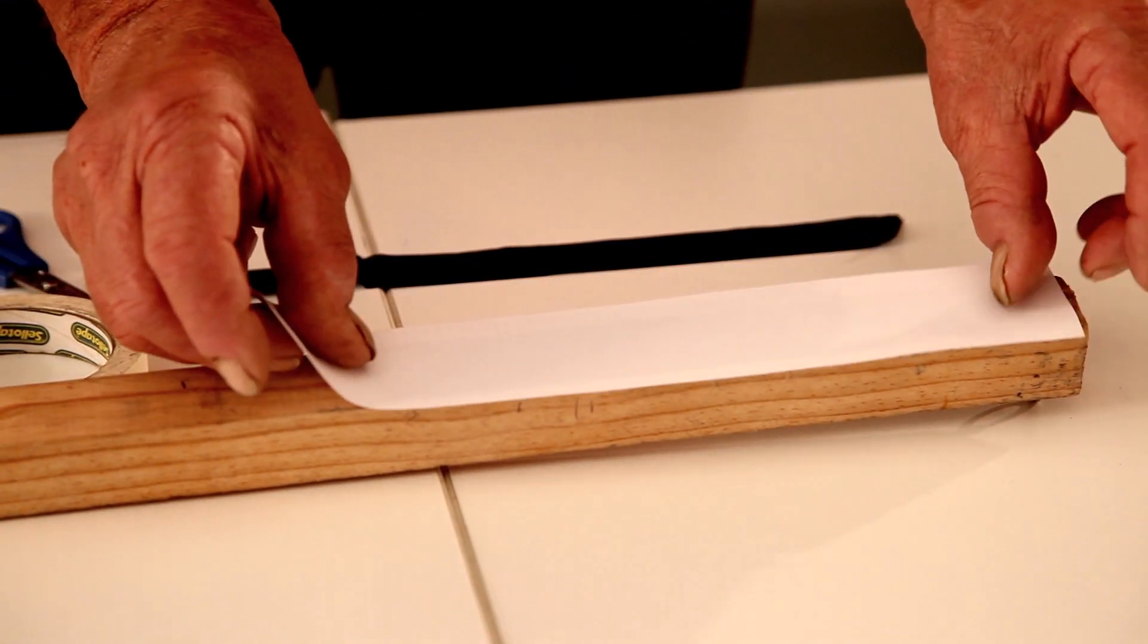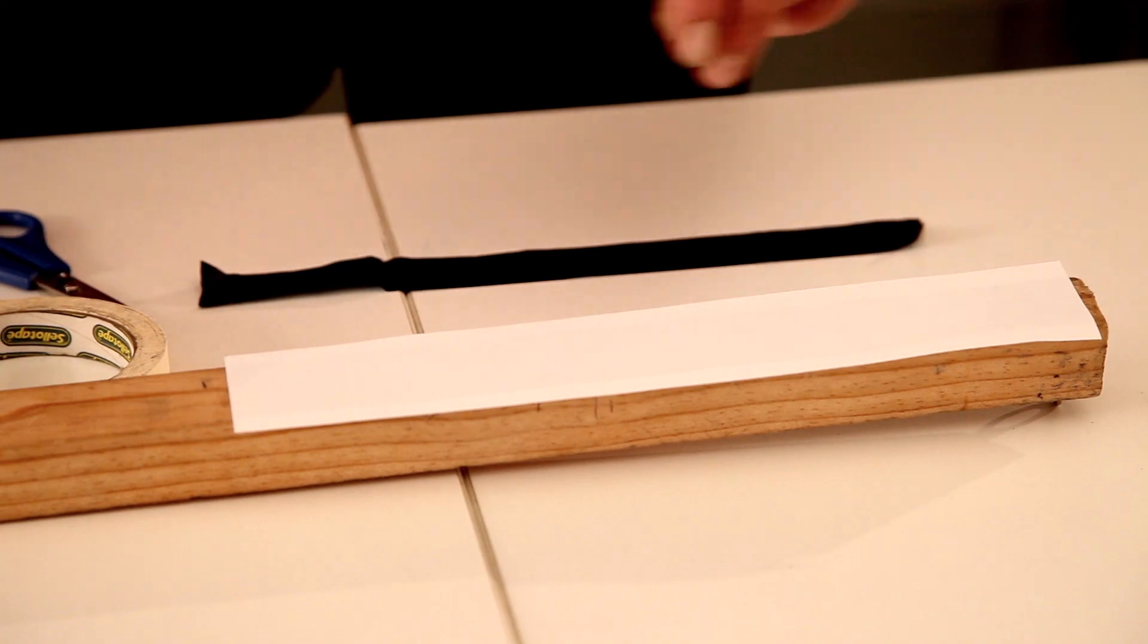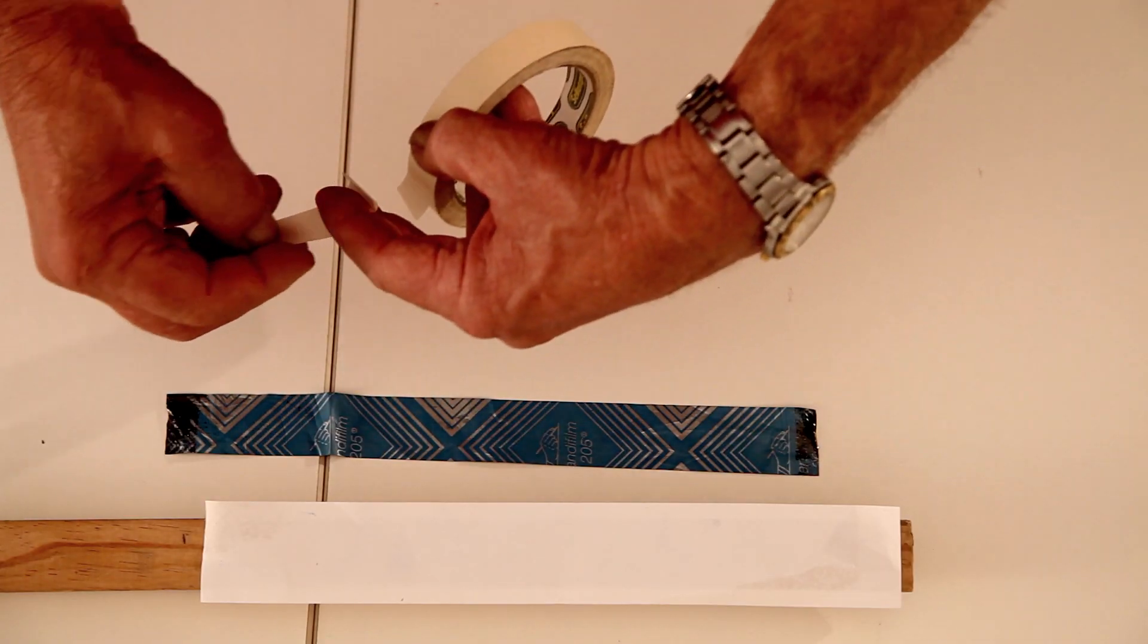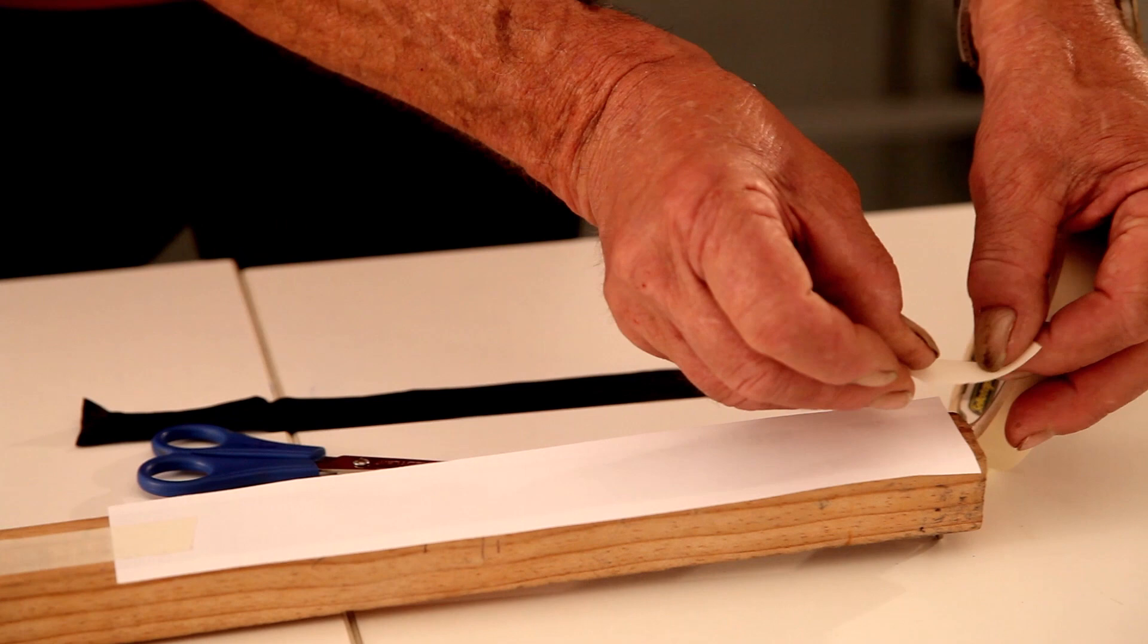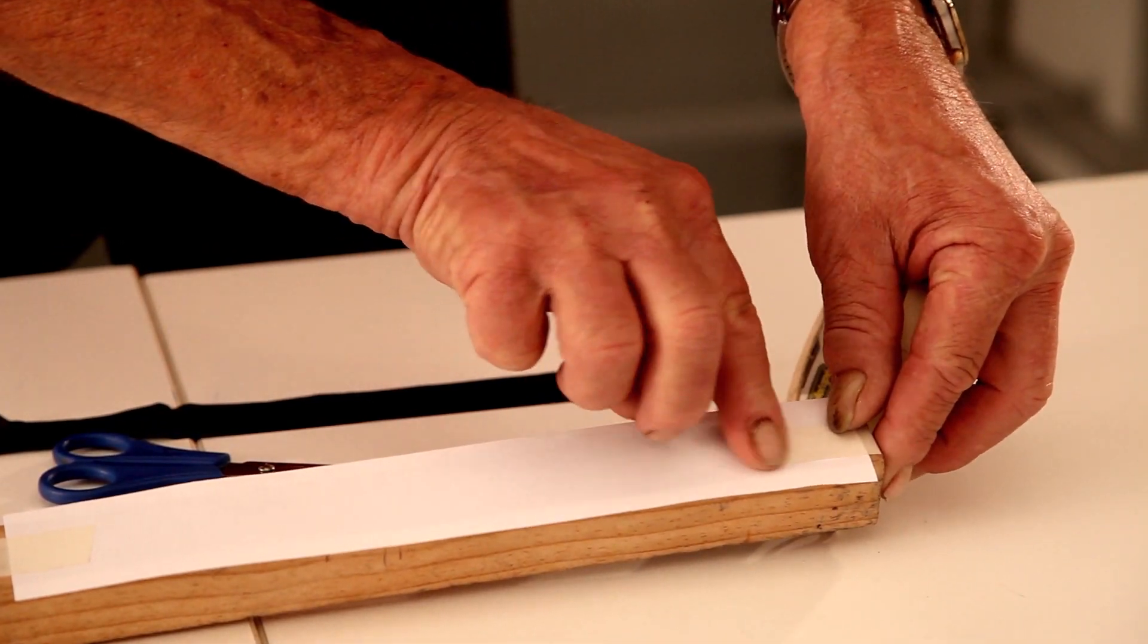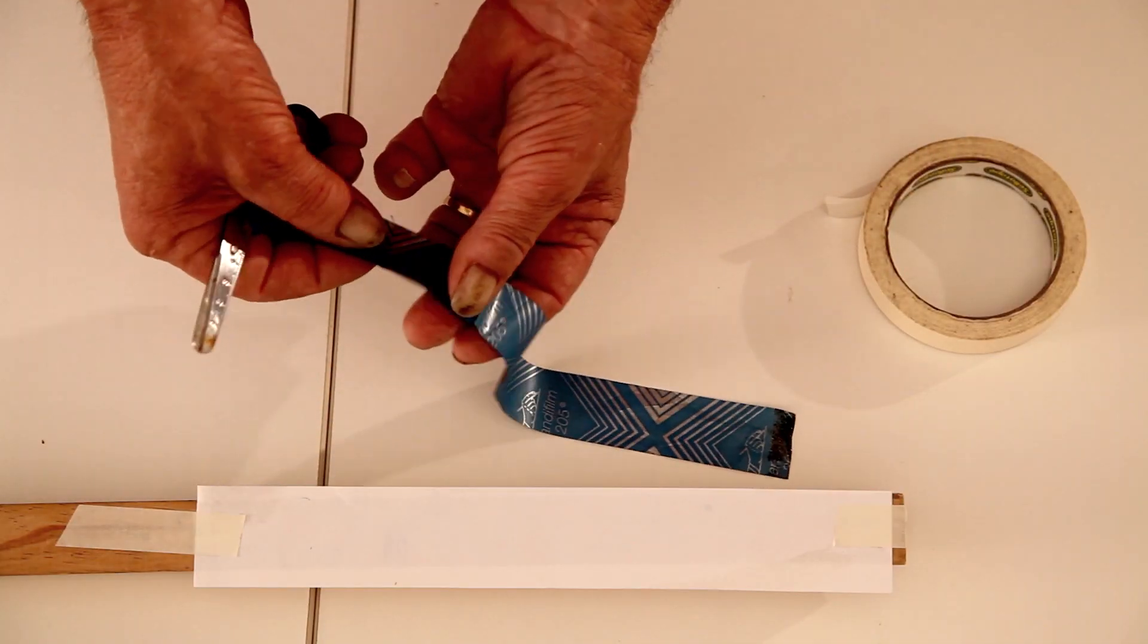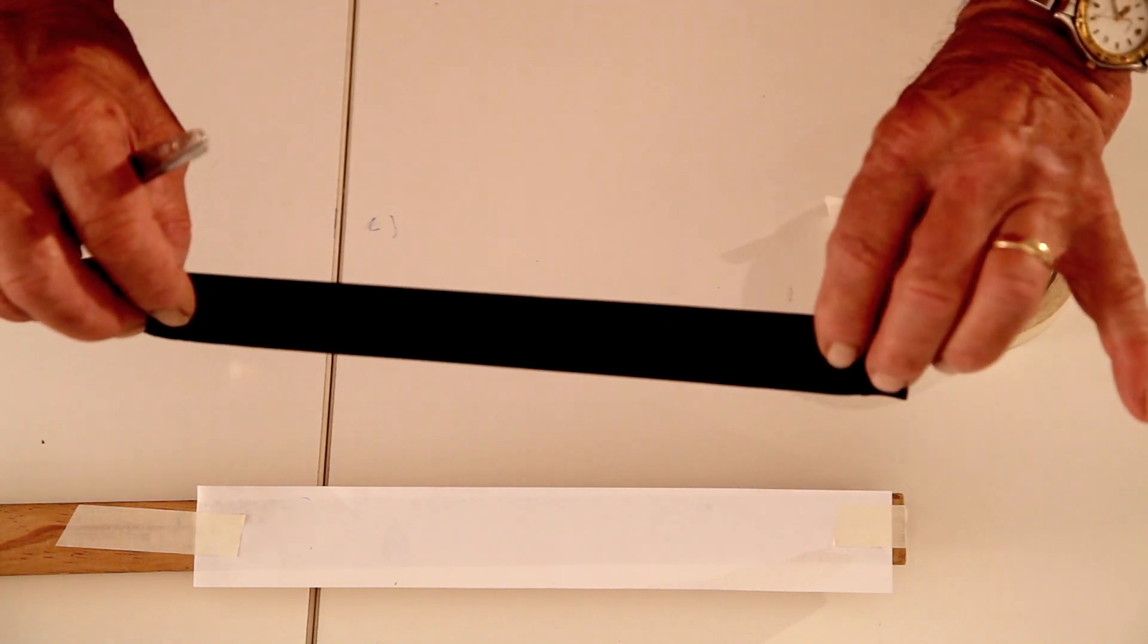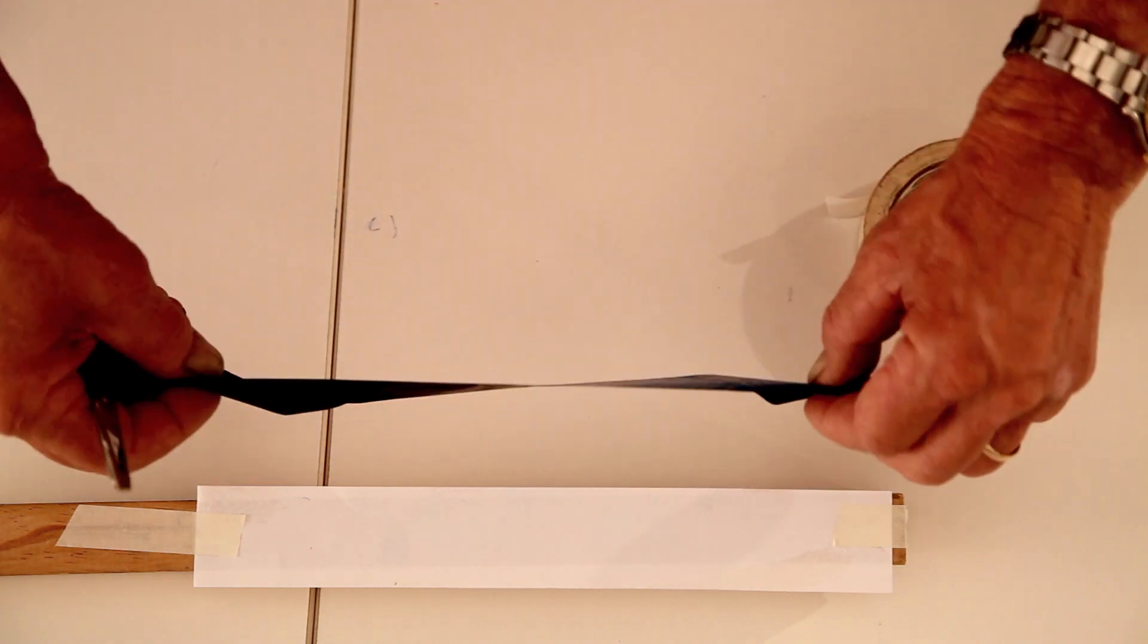Attach a strip of paper with masking tape to the lower end of the pendulum, together with a strip of carbon paper, making sure that the carbon side is against the paper.